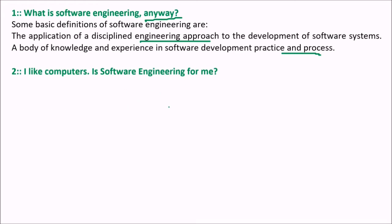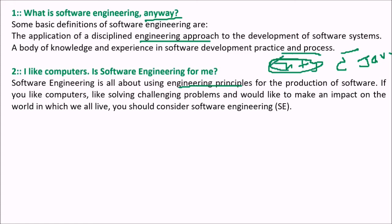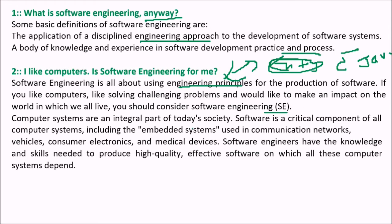I like computers — so is software engineering for me? Software engineering is all about using engineering principles for the production of software. When you have to add two values, you simply choose a language like C or Java and start coding. But as the problem becomes complicated — say, adding complex numbers — the complexity grows and you have to apply engineering principles. If you like solving challenging problems and want to make an impact, you should consider software engineering. Computer systems are an integral part of today's society, and software is a critical component of all systems, including embedded systems.